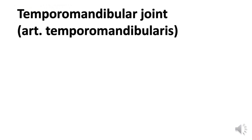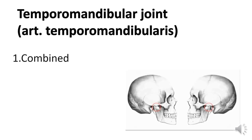The temporomandibular joint, articulatio temporomandibularis. The joint is combined, since both joints on the right and left work together. One cannot work without involving the other. That is, the right and left joints physiologically form a single system. Movements in them are carried out at the same time.